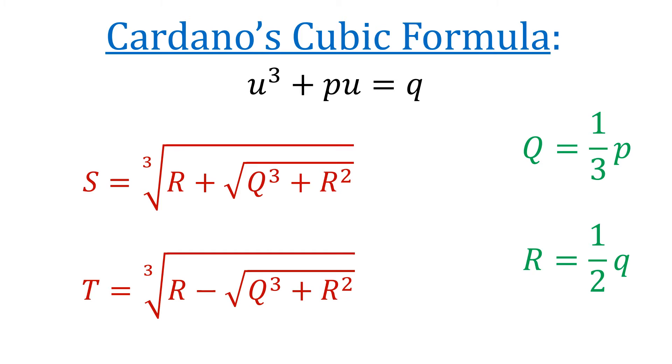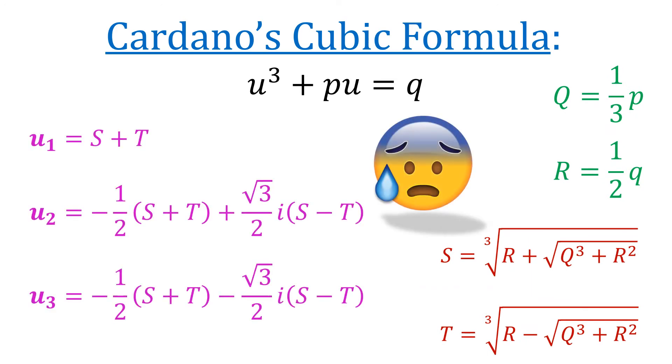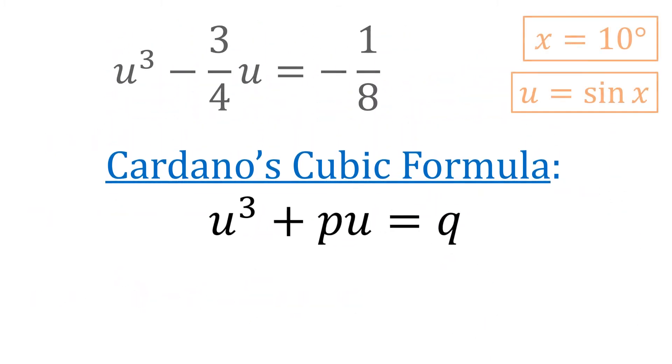Notice, if you will, that the only difference between S and T is the sign in the middle of the cube root expression. And here's the money shot, the three roots for this equation, in all their glory. Well, we'll take one root at a time, so here we go. Cardano's cubic formula.